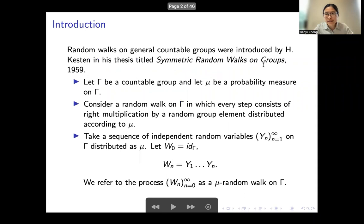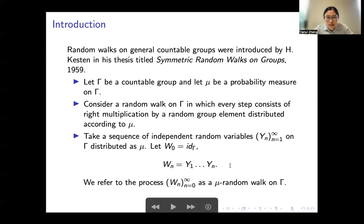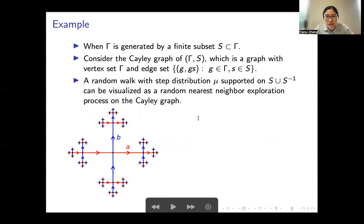Let's start with the definitions. Random walks on the integer lattice Z is a very classical object — it amounts to adding up identically distributed integer-valued random variables. Random walks on general countable groups were introduced by Harry Kesten in his thesis back in 1959. You take a countable group gamma and a probability measure mu on gamma. Sample a sequence of independent random variables y1, y2, and so on on gamma distributed as mu. The random walk is obtained by multiplying these increments each time on the right, starting at the identity element, and at time n we see the product of y1 up to yn. We call this the mu random walk on gamma.